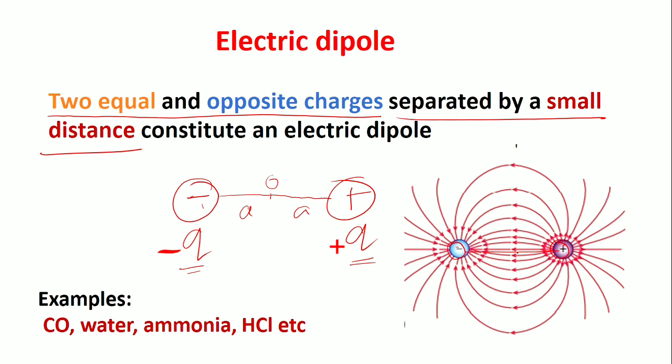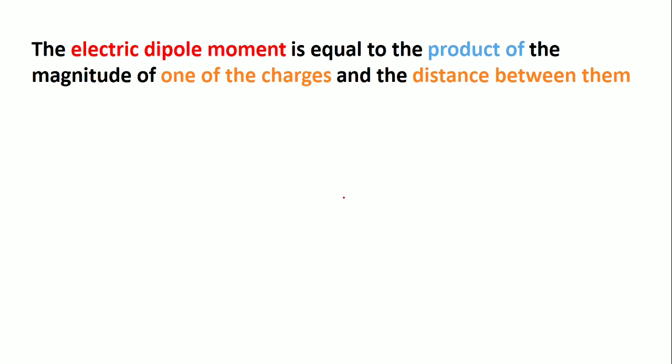Examples of electric dipoles: CO, water, ammonia, HCl. For example, CO looks like this: carbon is normally positive, oxygen is negative, giving us an electric dipole moment.